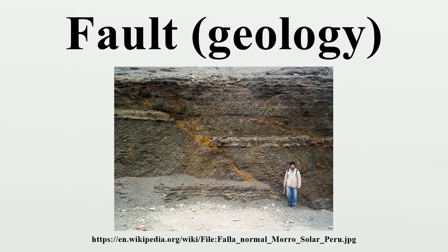The main types of fault rock include: cataclasite, a cohesive fault rock with a poorly developed or absent planar fabric, characterized by angular clasts and rock fragments in a finer-grained matrix; tectonic or fault breccia, a medium- to coarse-grained cataclasite containing greater than 30% visible fragments; and fault gouge, an incohesive clay-rich fine- to ultra-fine-grained cataclasite which may possess a planar fabric, containing less than 30% visible fragments, with rock clasts possibly present.